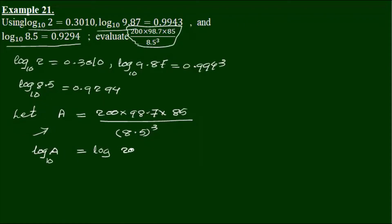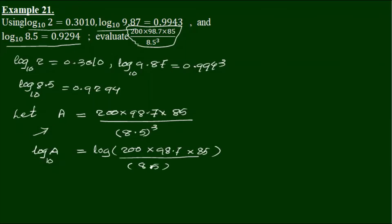200 into 98.7 into 85 by 8.5 — the whole expression squared.